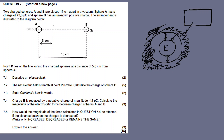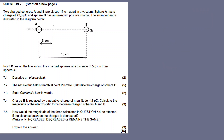Sphere A has a charge of 3.0 picocoulombs, and sphere B has an unknown positive charge. So both A and B are positively charged, but the magnitude of B's charge is unknown. Point P lies on the line joining the charged spheres at a distance of 5.0 centimeters from sphere A. The arrangement is illustrated in the diagram below.